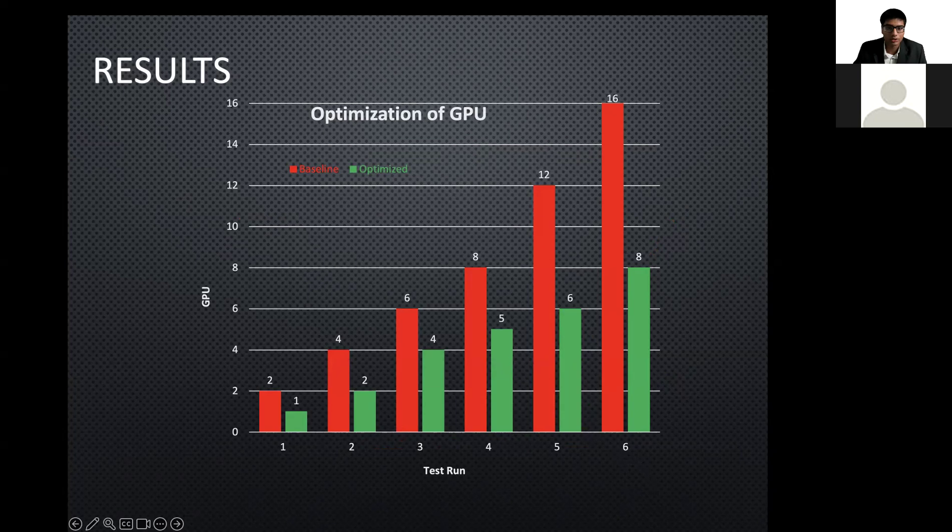Results. The experimental result graph shows comparison of GPUs used for model training. The number of GPUs required for model training are located on the y-axis while tests run is on the x-axis. The red color shows GPUs needed to train the models, while the green shows the GPUs needed after applying our approach. The results show that our method requires less GPUs in all tests run.